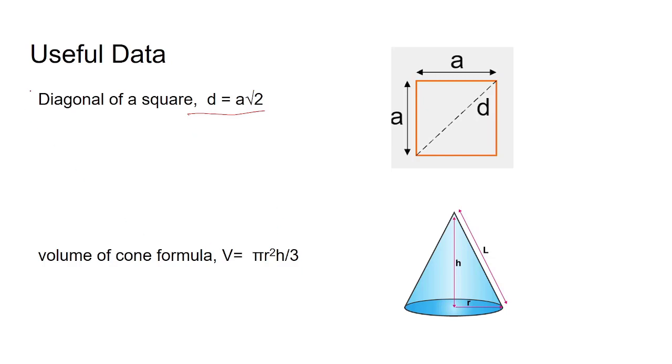Second formula is volume of cone: V equals π r squared multiplied by h divided by 3. Here h is the vertical height of the cone and r is the radius of the base of the cone.